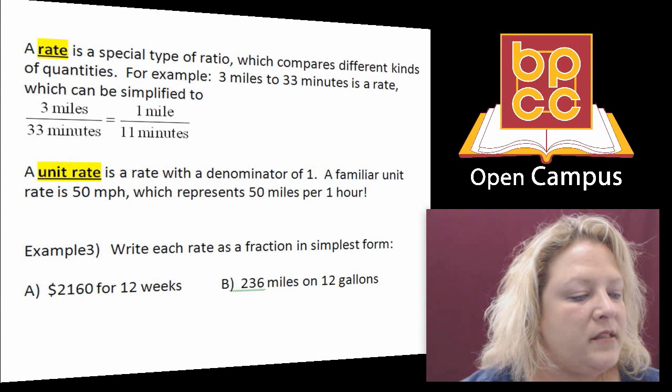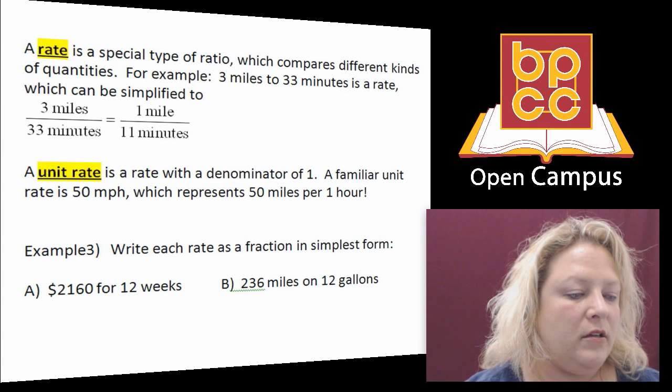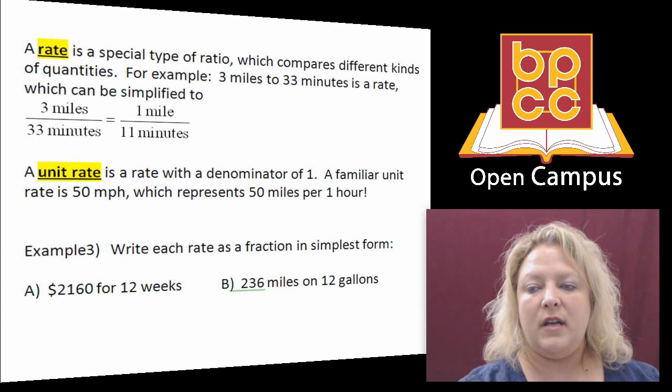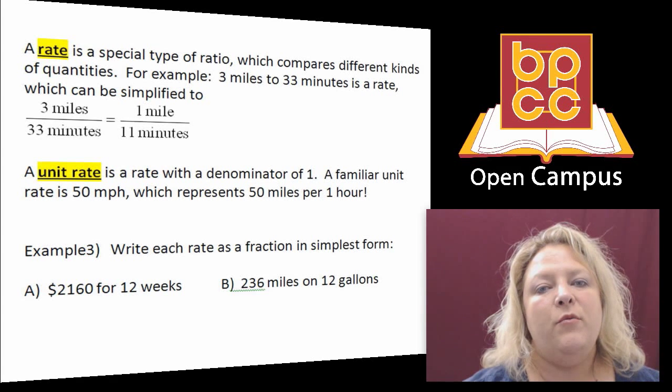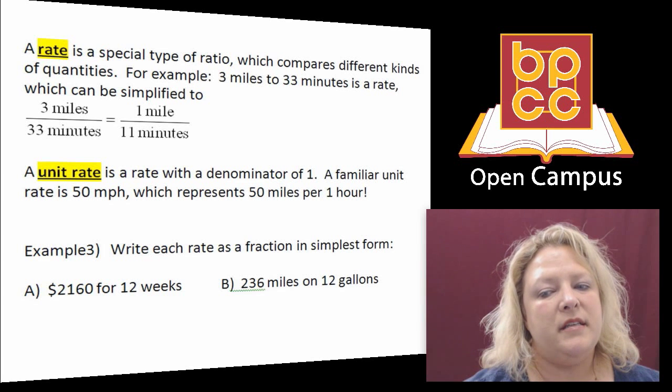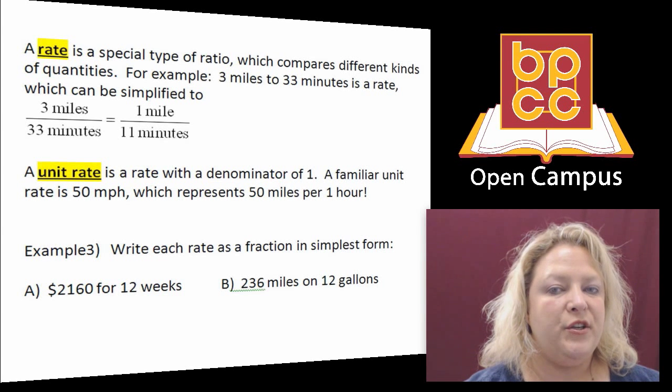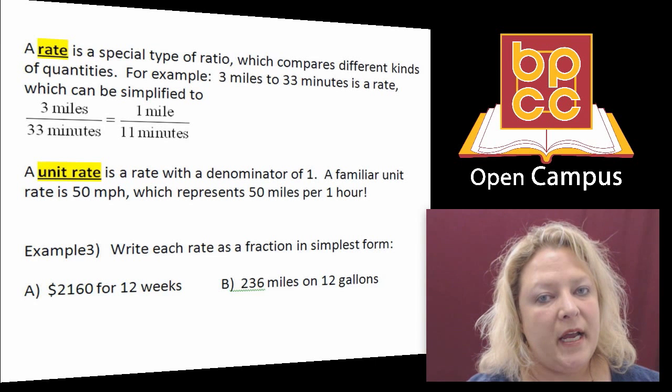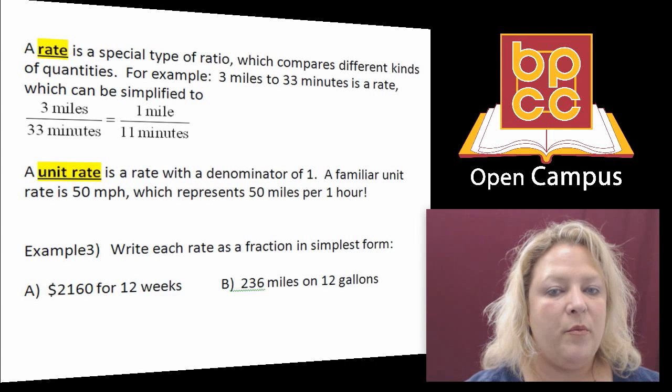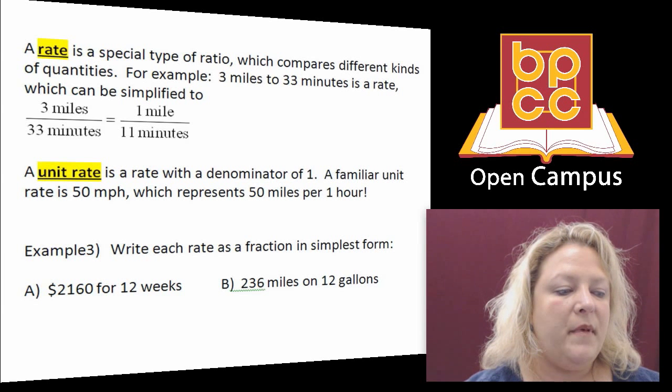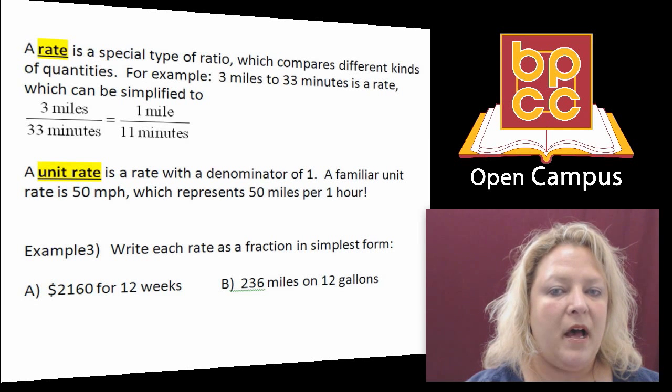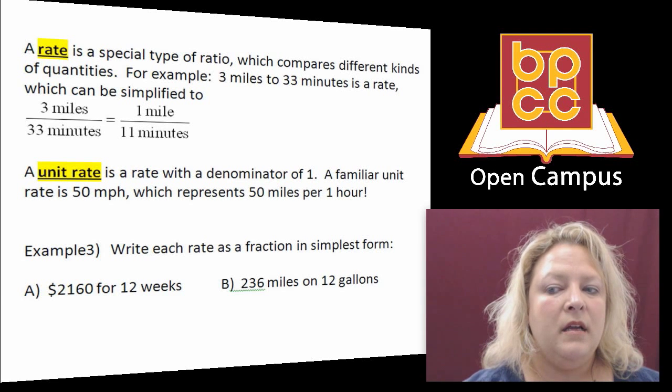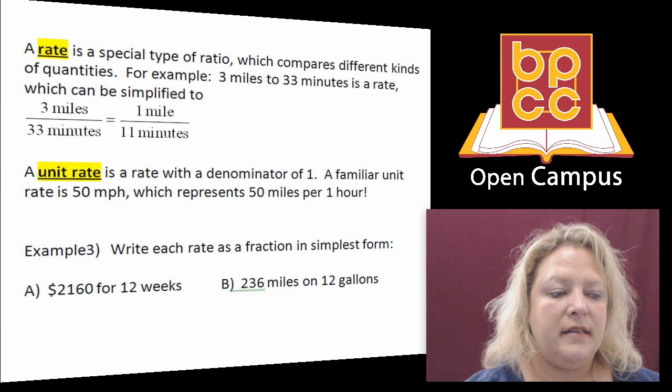And something else that we want to talk about is called a rate. And notice what it says, rates are special kinds of ratios. And when you're talking about ratios, it doesn't necessarily mean that you're comparing two like things. Most of the time it's like so many cents per pound. You're paying so much per mile. And you'll notice this, this is 3 miles in 33 minutes, which reduces to 1 mile in 11 minutes. And that is called a rate.